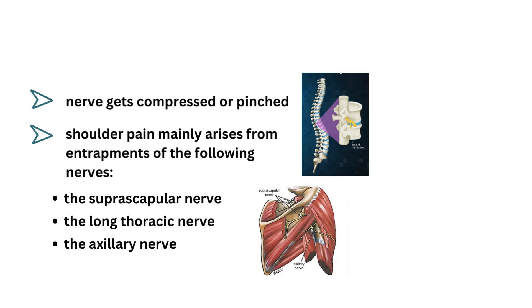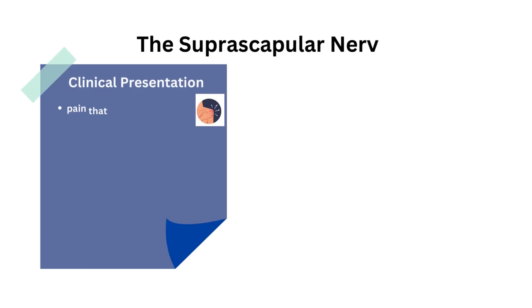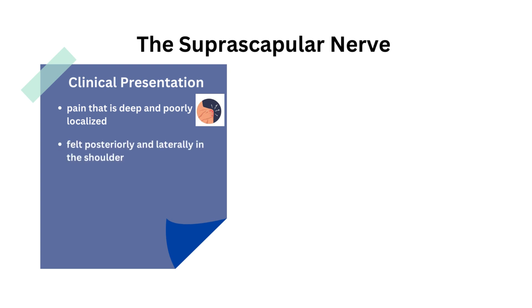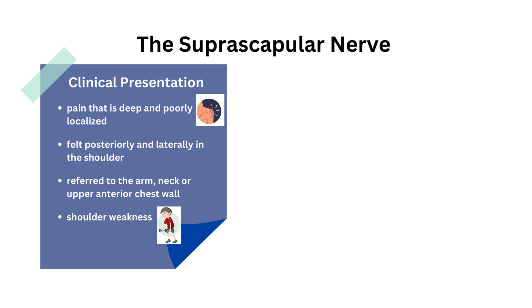The patient usually complains of pain that is deep and poorly localized. It is felt posteriorly and laterally in the shoulder, or referred to the arm, neck, or upper anterior chest wall. The patient also describes shoulder weakness on examination.